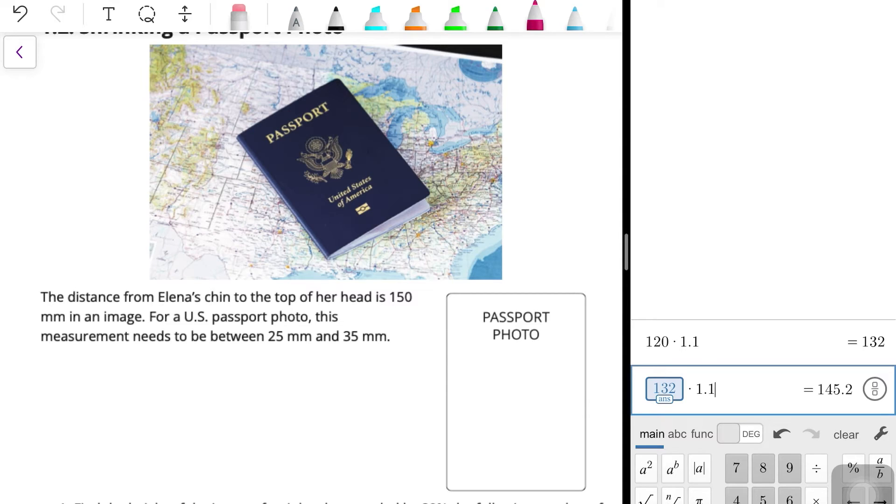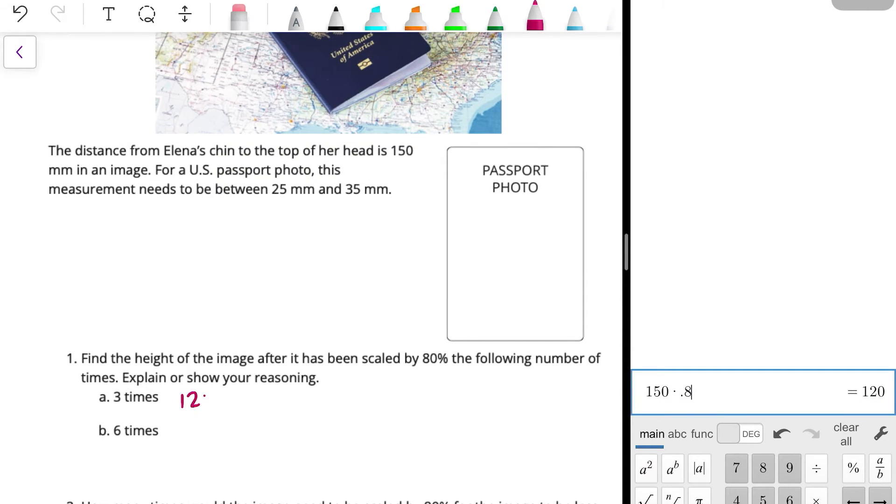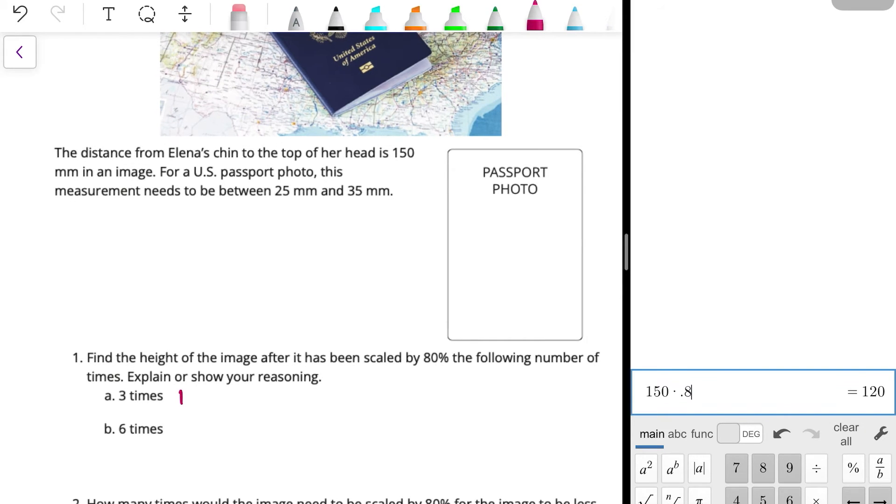And so we're going to find the height of the image after it has been scaled by 80% the following number of times. So if we scale it by 80% three times, what will that be? So we're going to use our calculator to help us here. All right, so we have 150 millimeters, and we are scaling that by 80%. So we would have 120 millimeters. And actually, since we're going to show our reasoning, I'll write that down. So we had 150 times 0.8 gives us 120.